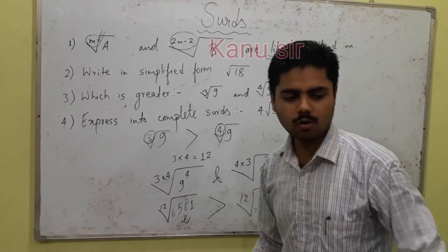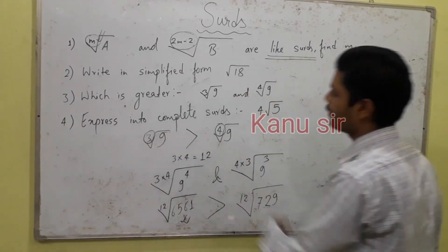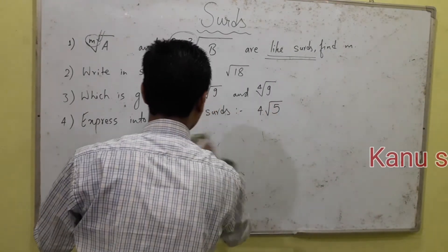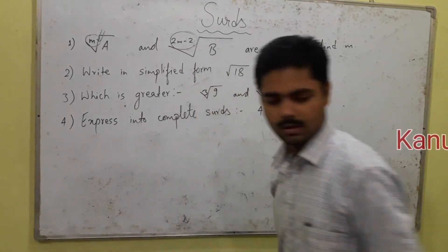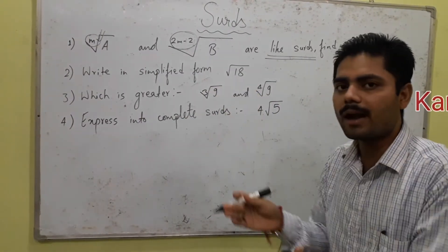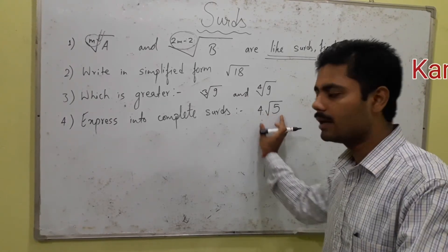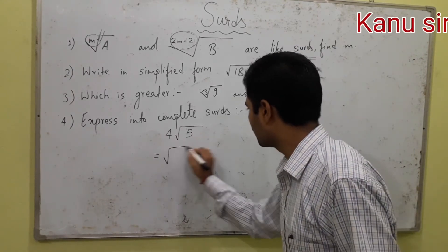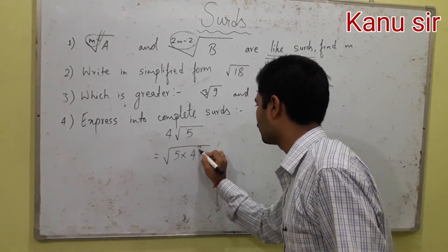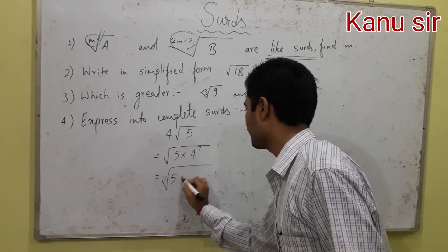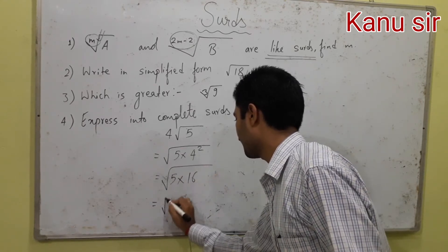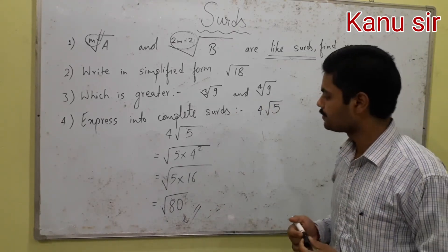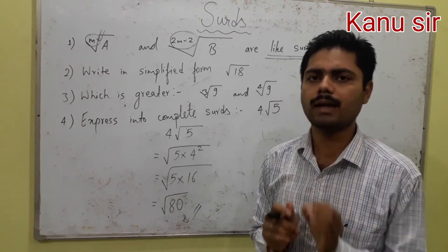The last concept for this video: expressing a mixed surd as a complete surd. We do the opposite of simplification. For example, 4 root 5 equals root of 4 squared times 5, which is root of 16 times 5, equals root 80. So root 80 is the complete surd form of 4 root 5.